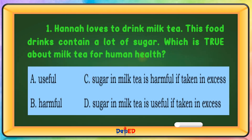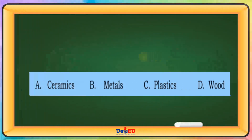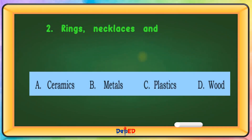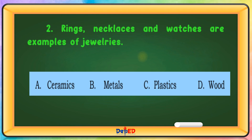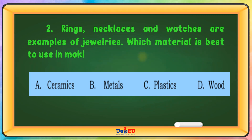Rings, necklaces, and watches are examples of jewelry. Which material is best to use in making jewelry? The correct answer is Letter B: Metals.